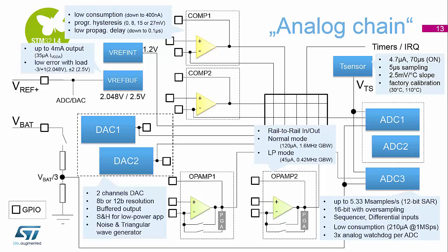We have two op amps on board this device — rail-to-rail op amps. They can work in normal mode when you need performance and speed, or in low power mode at about 45 microamps. All the pins can be bonded to external GPIO pins so you can connect inputs and outputs to whatever you need. We also have two DACs on board, up to 12-bit resolution, with buffered outputs and pins bonded to the outside world, plus noise and triangular wave generation integrated inside the cell.